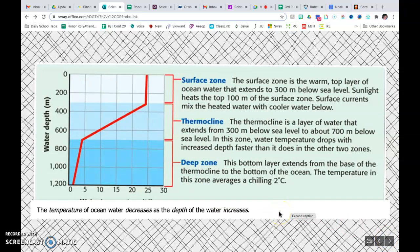Let's take a look at this water depth graph for just a second. And we see that we have different zones. The temperature of ocean water decreases as the depth of the water increases. So the further you go down, the deeper you go, the colder the water gets.